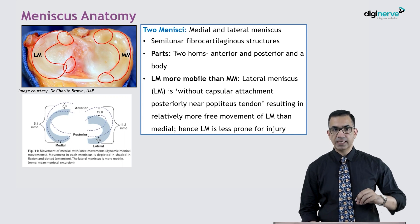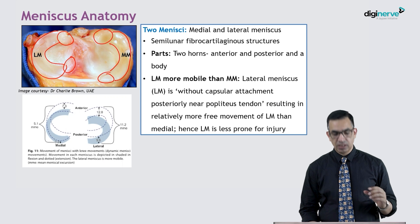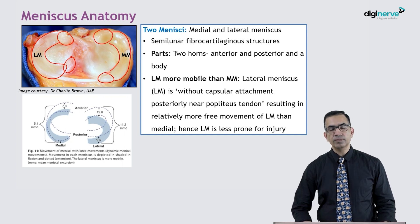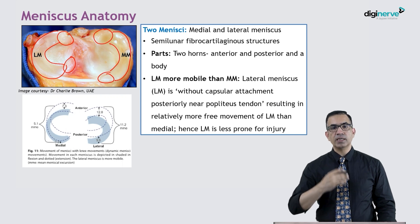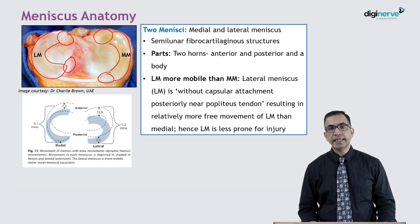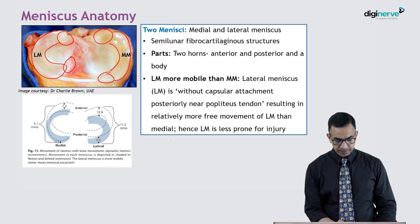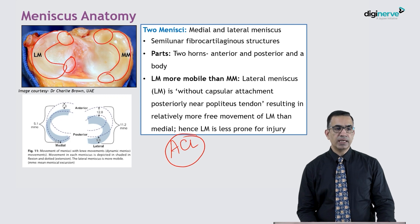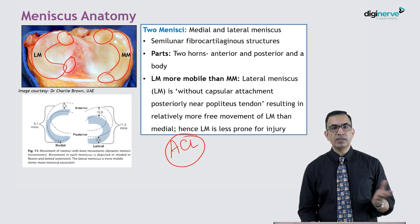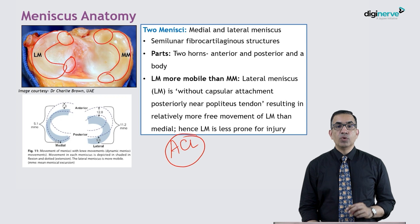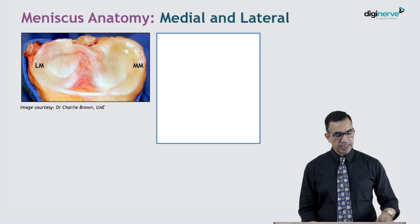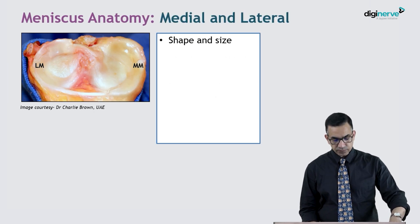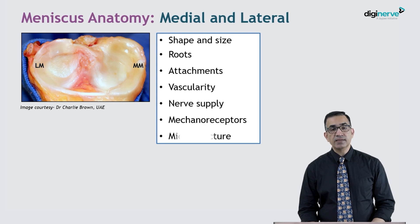It is important to understand that the lateral meniscus is far more mobile compared to the medial meniscus because it has lesser rigid attachments. It has no capsular attachment near the popliteus tendon and is far more flexible in anteroposterior movements. Therefore, it is less prone to injury — except in ACL tears, where you may find more lateral meniscal injury. In routine movement, the medial meniscus is more prone to injury because of its rigid attachments.